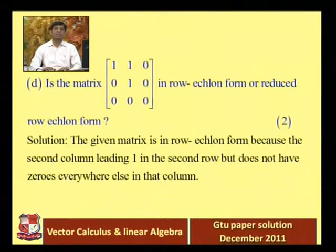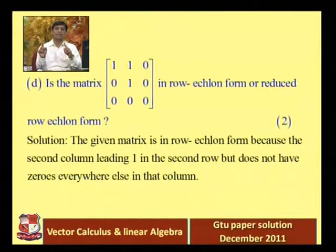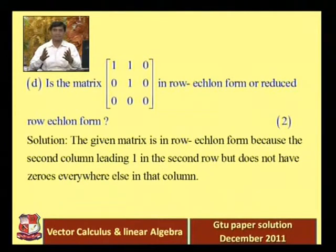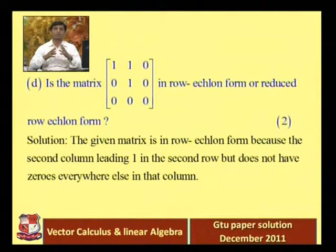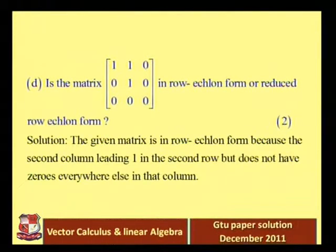A matrix is in row echelon form if it satisfies three conditions. First, the leading entry — the first non-zero element in each row — must have all zeros below it in that column. Second, leading entries must go from left to right as we move from top to bottom. Third, any zero rows must be at the bottom of the matrix.